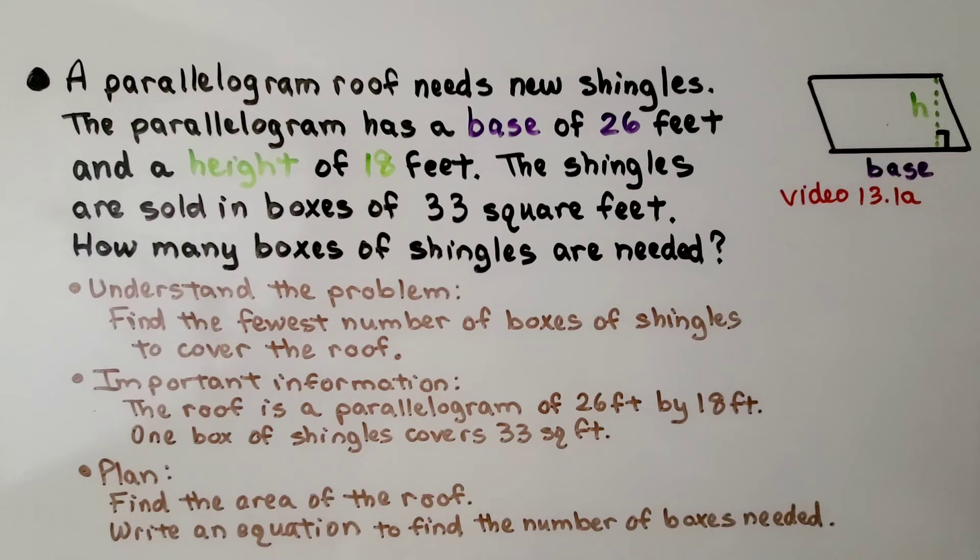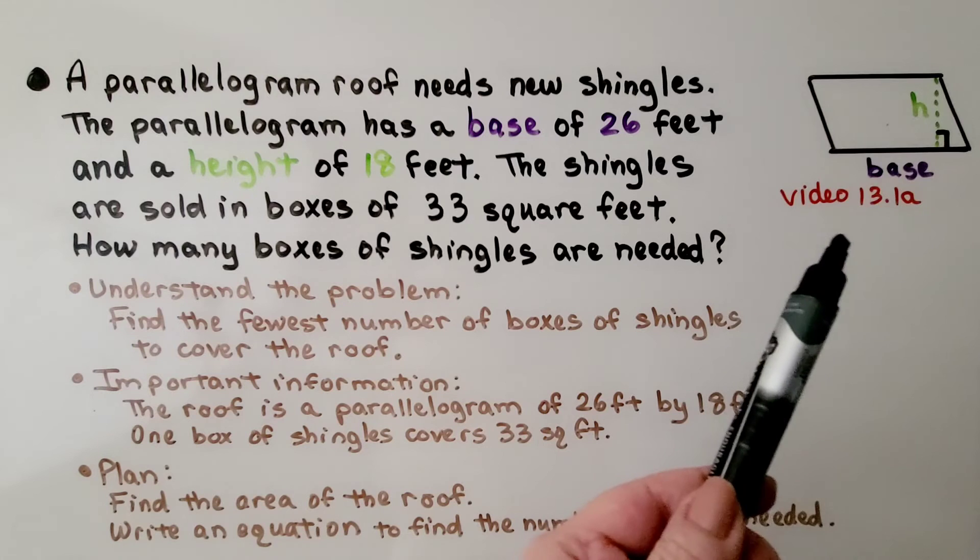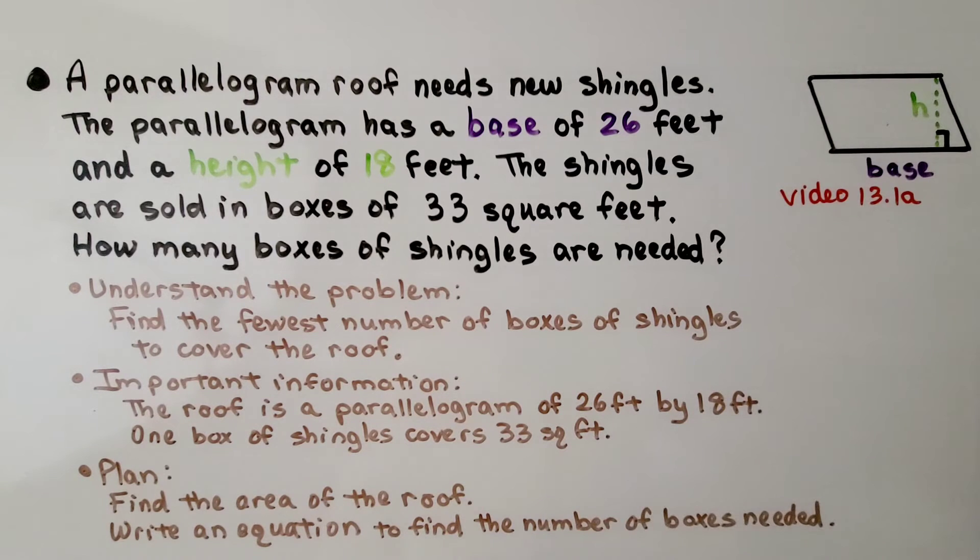A parallelogram roof needs new shingles, and the parallelogram has a base of 26 feet and a height of 18 feet. The shingles are sold in boxes of 33 square feet. How many boxes of shingles are needed? We learned how to find the area of a parallelogram back in video 13.1a. If you missed it and you don't know how, that video is linked in the description.